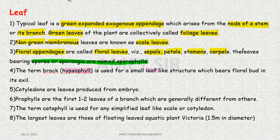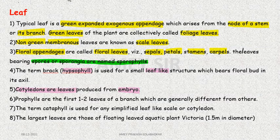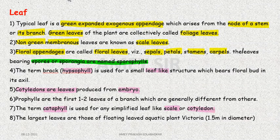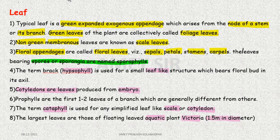A leaf-like structure associated with the floral bud — which has the embryo — refers to cotyledonary leaves. The term cataphyll is important for scale leaves or cotyledons. Victoria is an aquatic plant which represents the largest leaves, up to 1.5 meters in diameter.